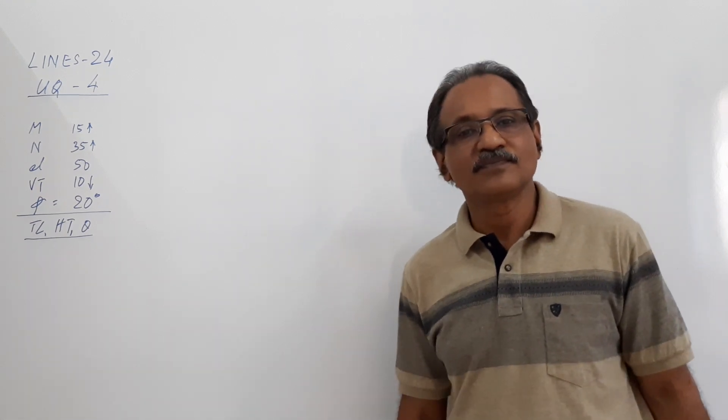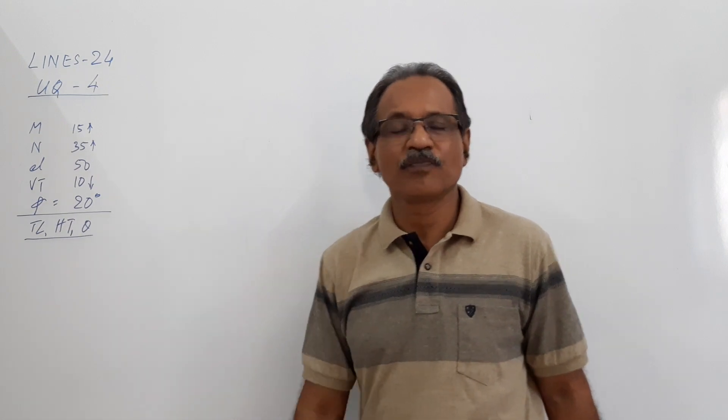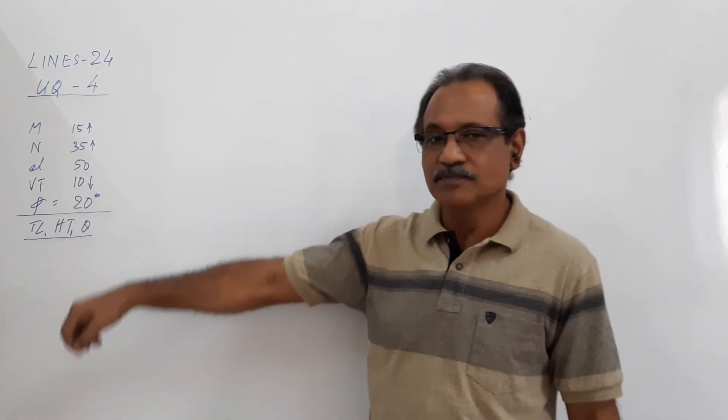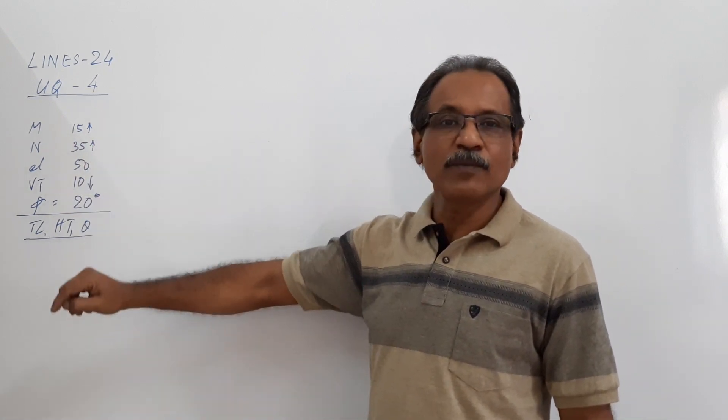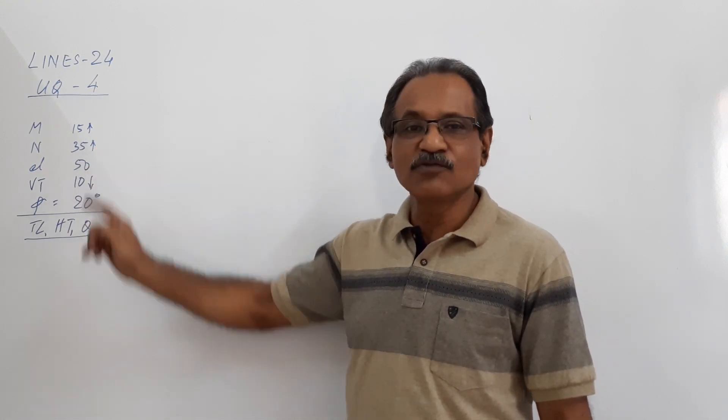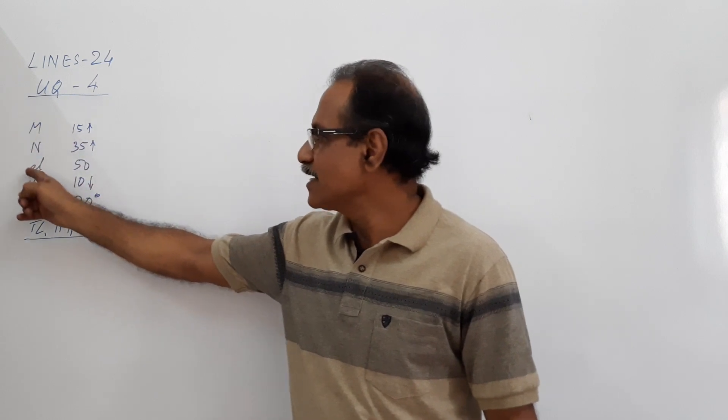Hi students, we go to Lines-24 university question number 4, a very important question. M of a line is 15 mm of HP and N is 35 mm of HP. The length of the elevation is 50 mm. This data is to draw the elevation.